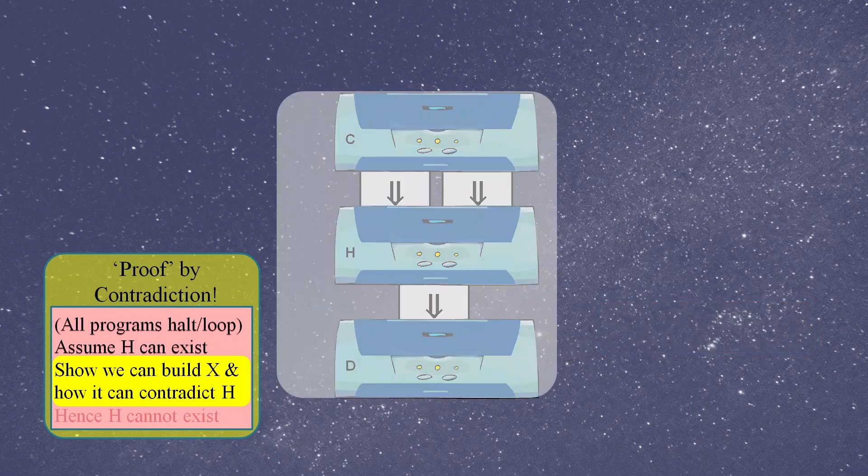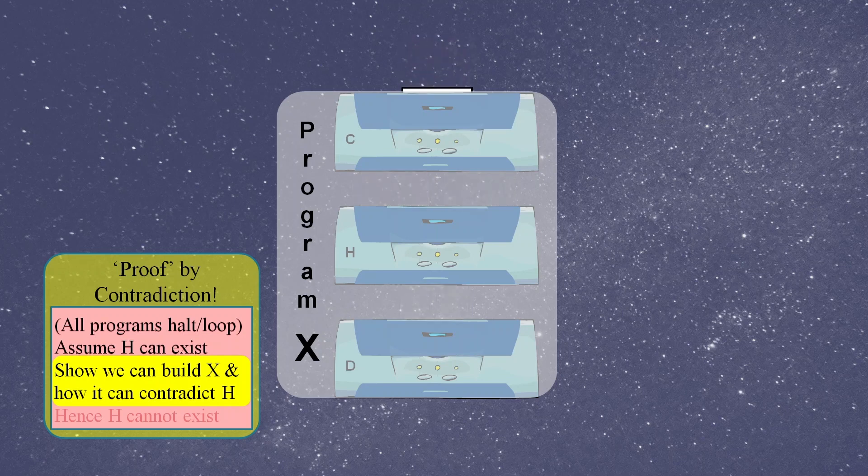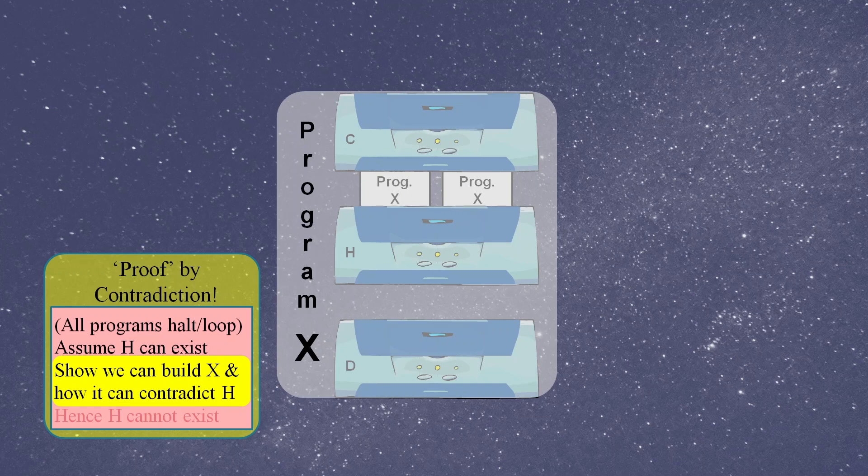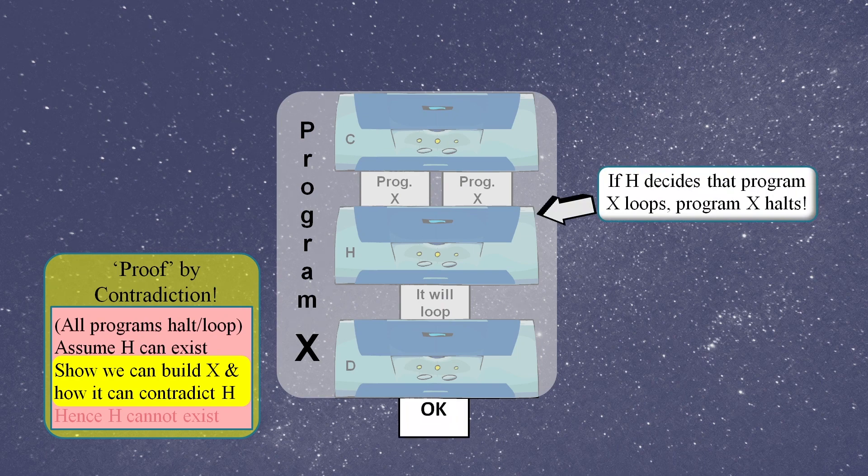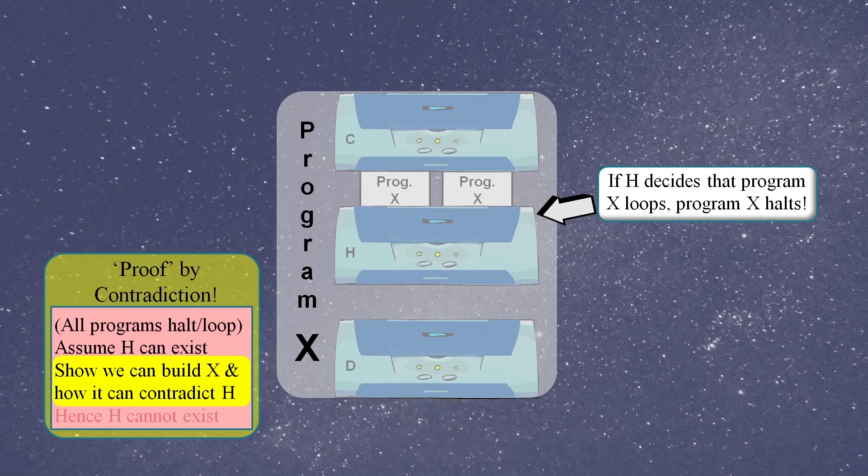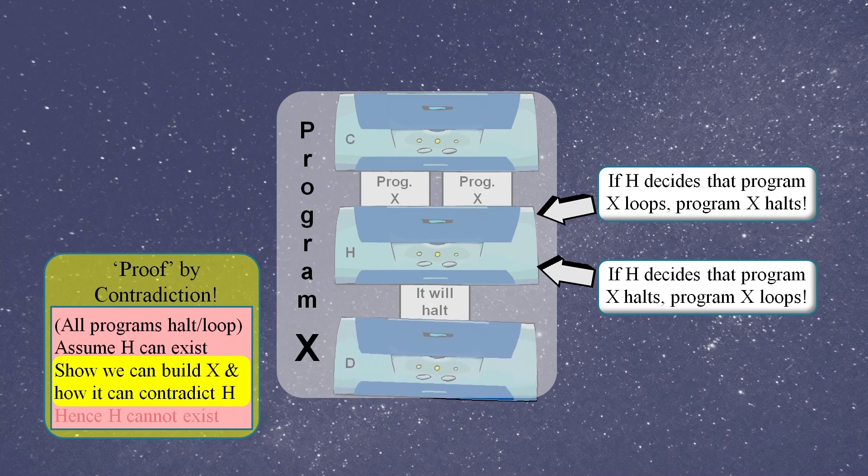Now here's the really clever bit: we use the code of Program X as input to itself. The copier then makes two copies of Program X which feed into the functionality of our halt loop decider H. So if H decides it will loop then this goes into functionality D which forces it to halt, and so the final state of Program X would appear to contradict the output of H. And if H says it will halt then the functionality of D will go into a loop, which again appears to contradict the output of H. And the contradictions mean that Program H cannot exist.